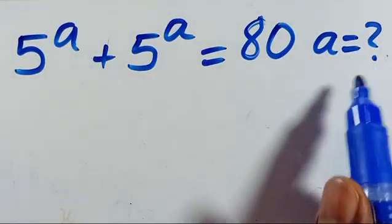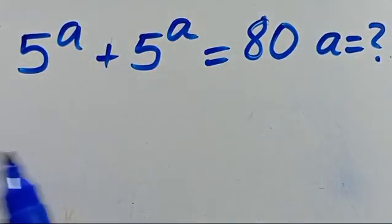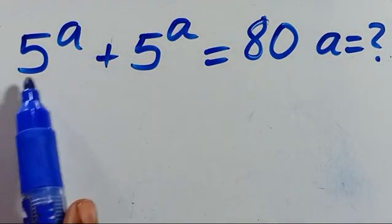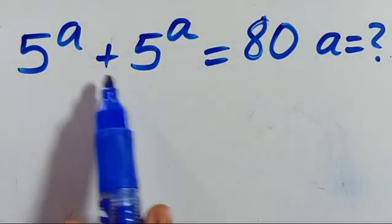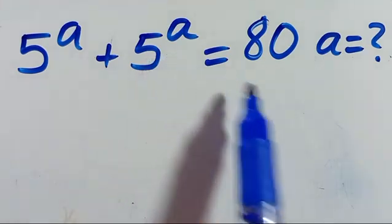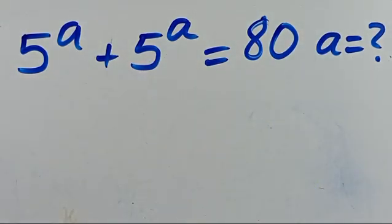What is the value of A? Given that we have 5 to the power of A plus 5 to the power of A equals 80.